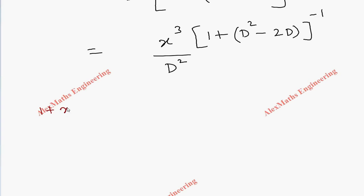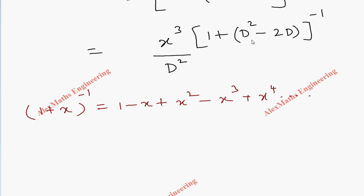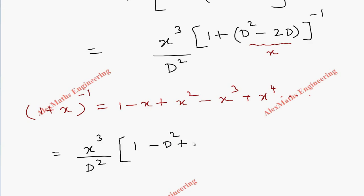We use the formula (1 + x)⁻¹ = 1 - x + x² - x³ + x⁴ + ... where this entire term (D² - 2D) is treated as x. So we have (1/D²) · x³ multiplied by [1 - (D² - 2D) + (D² - 2D)² - ...].